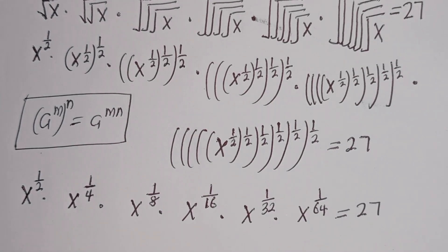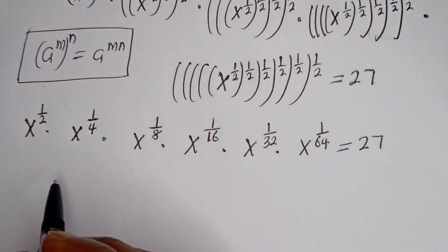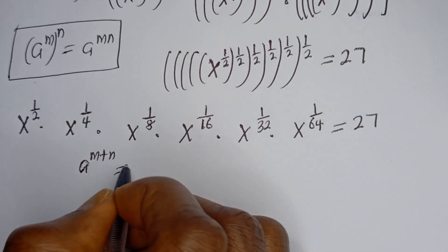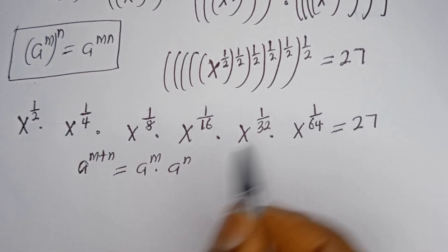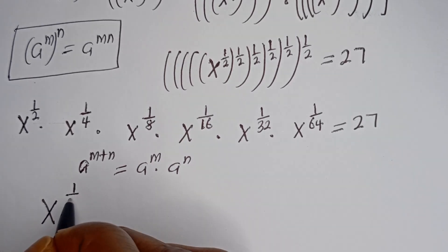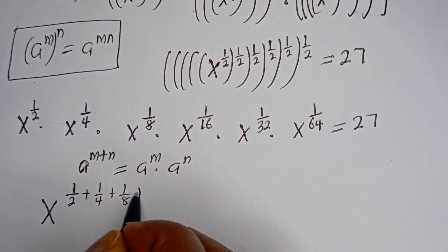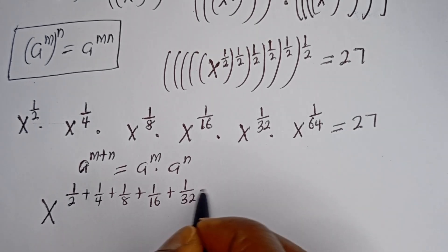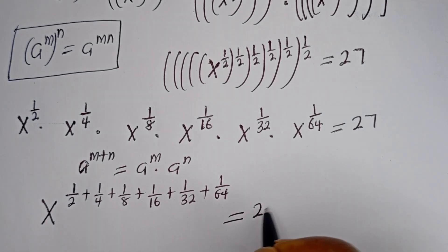Just watch to the end and see what the solution looks like. Take note that if you have a to the power of m plus n, this equals a to the power of m multiplied by a to the power of n. So all of this can be written as s to the power of 1/2 + 1/4 + 1/8 + 1/16 + 1/32 + 1/64, equals 27.